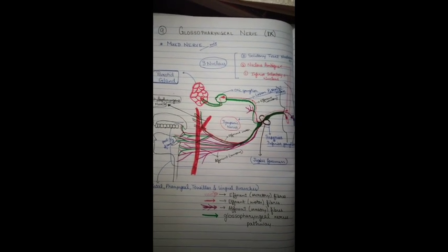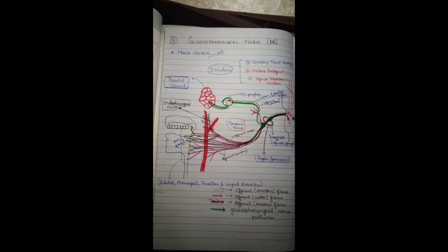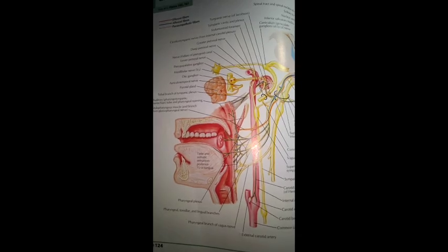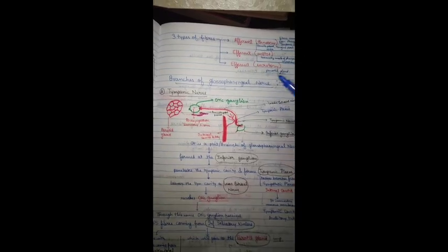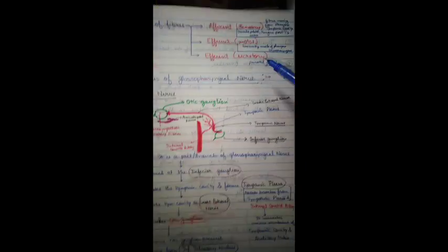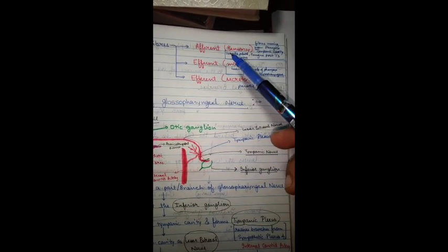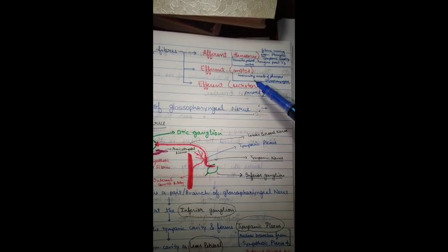You can compare this diagram to Netter's page 124. To summarize: the sensory fibers run from the pharynx, tympanic cavity, tonsil, palatal arches, and posterior one-third of the tongue; the efferent motor fibers innervate the stylopharyngeus muscle of the pharynx; and the efferent secretory fibers go to innervate the parotid gland.